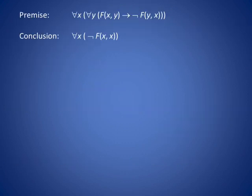Once again, symbolically, the premise is: for all X, for all Y, F of X and Y implies not F of Y and X. The conclusion is: for all X, not F of X and X. So how would we construct a proof of this?